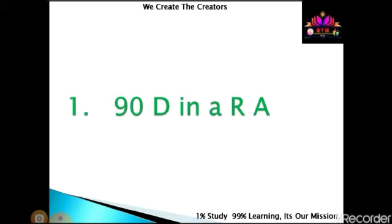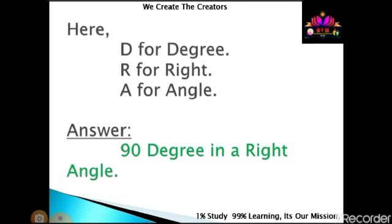Here's number one: 90 D in a R A. Here D has one abbreviation, R has one word, A has one word. Identify that: D for degree, R for right, A for angle. Answer: 90 degrees in a right angle.